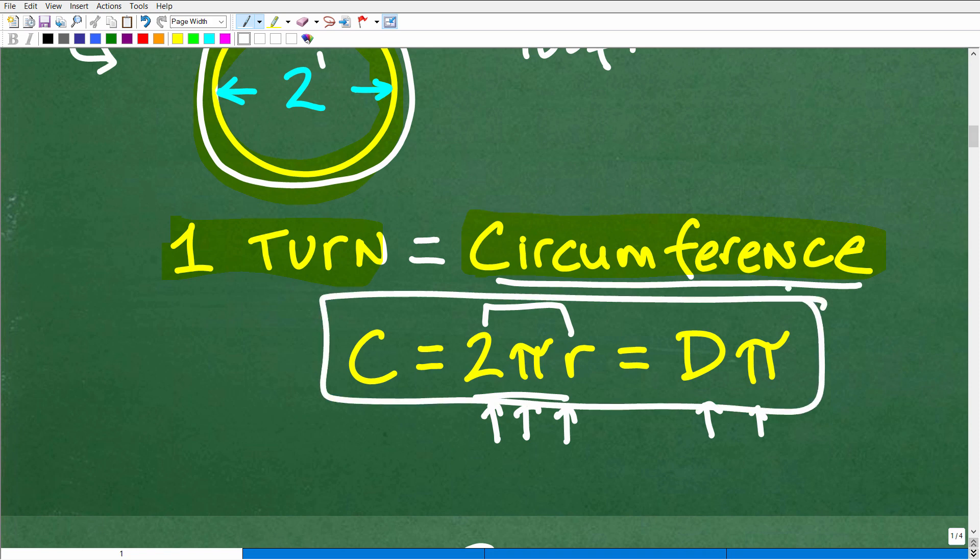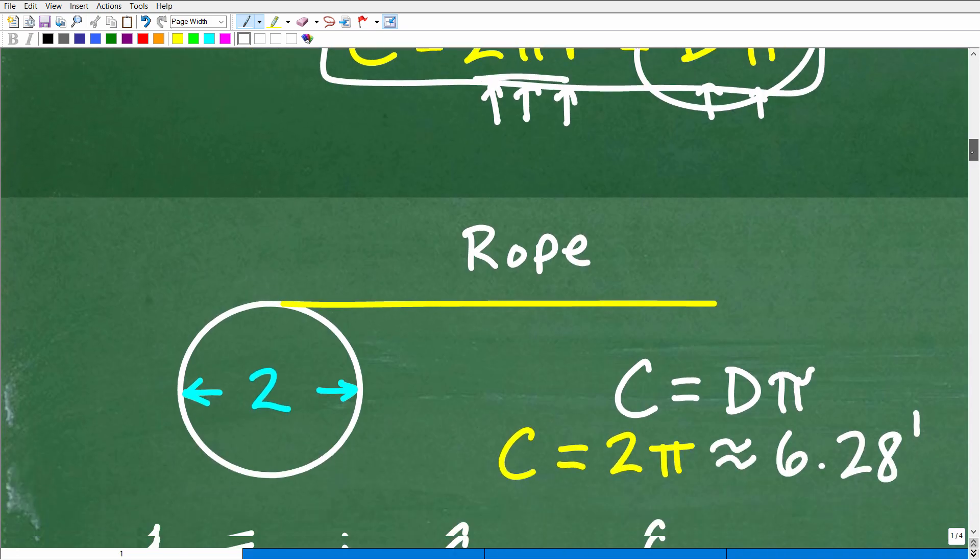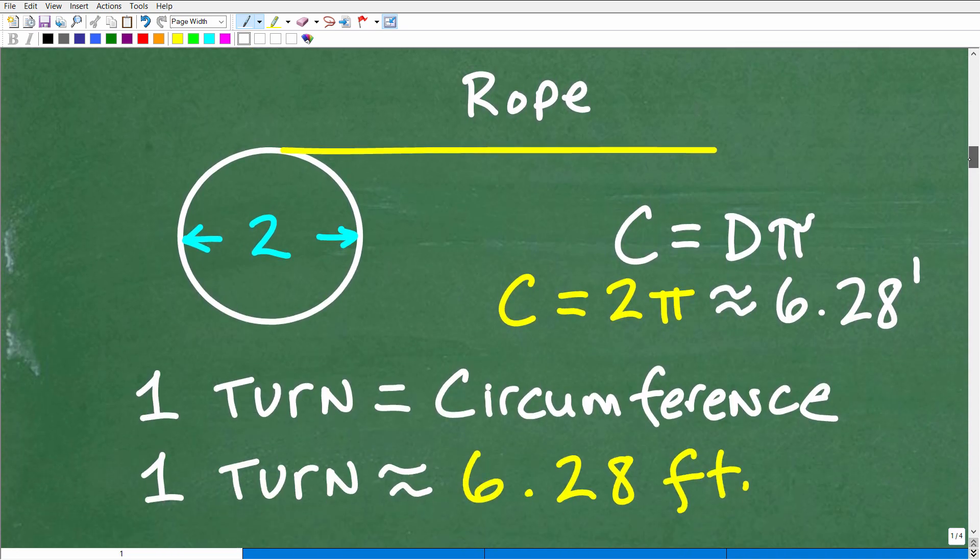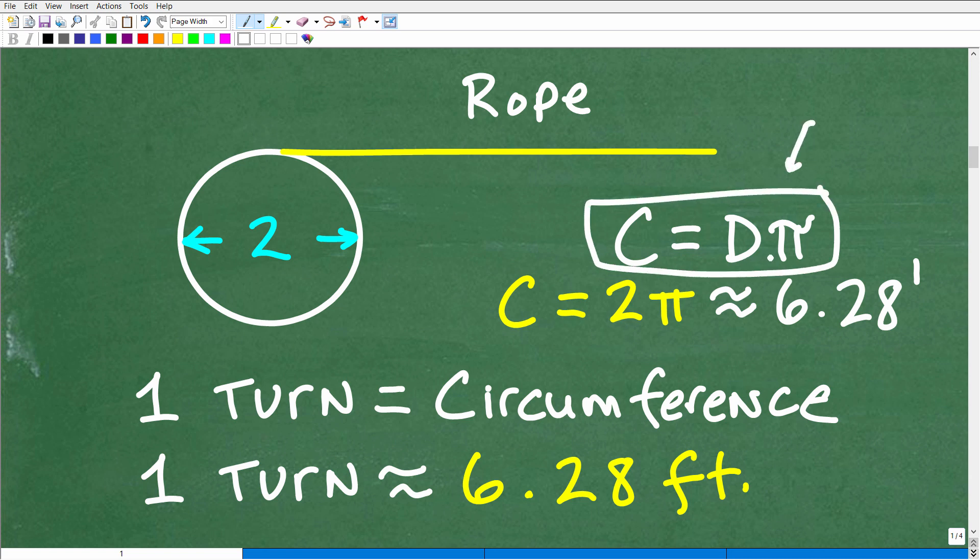So in this particular situation, because we have the diameter, we can use this formula for circumference. And this is going to be super easy. So let's go ahead and figure out the circumference of this circle, this circular pulley. So the circumference, again, is going to be equal to the diameter times pi.